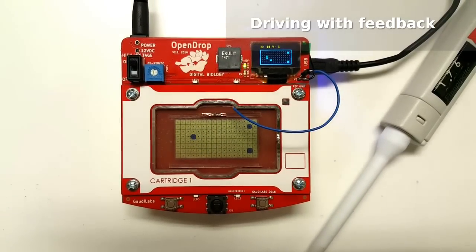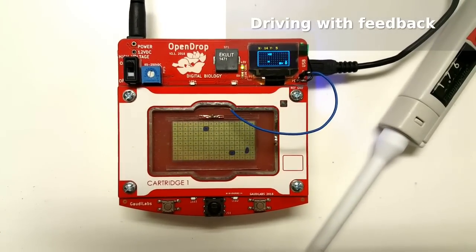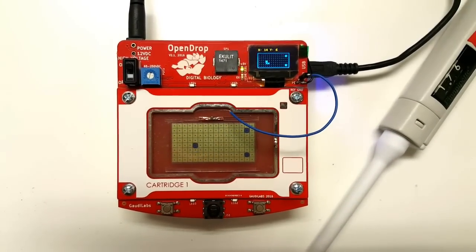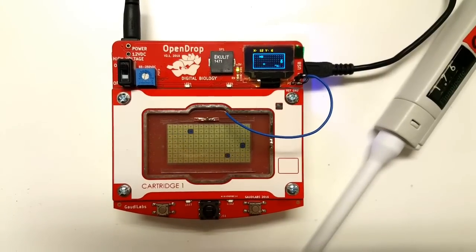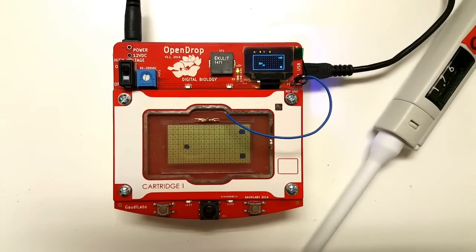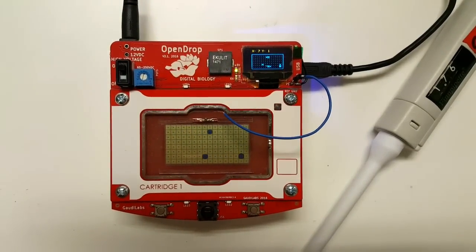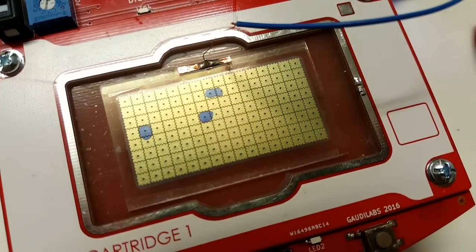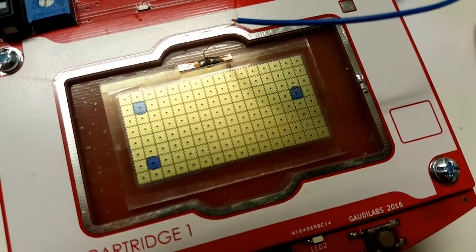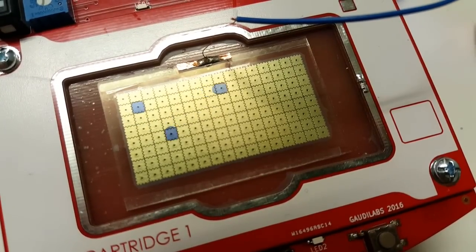Now the droplets are driven with feedback, which means the OpenDrop electronics can control the movement of each droplet. As you see, when one droplet gets stuck, the other will wait until it's finished to reach its position. The faster droplet waits for the slower droplet to reach its position.